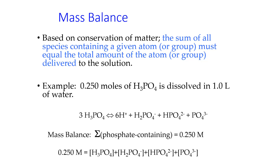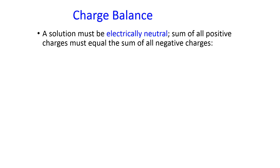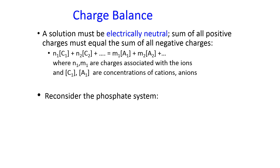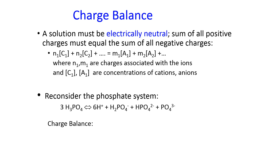We can add an additional equation by making the charge balance. The charge balance is based on the idea that the solution overall doesn't contain a net charge. The sum of all the positive charges from positive ions must equal the sum of all the negative charges from negative ions. Looking at the phosphate system, this gets a little tricky because the charge balance does not look balanced. You put the positive ions on one side and the negative ions on the other side and add them together, with coefficients determined not by stoichiometric coefficients but by the charge on the ion.